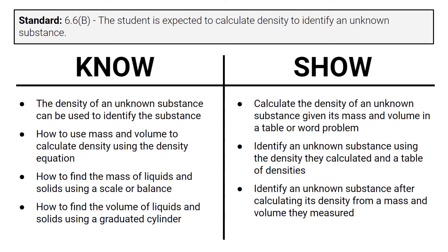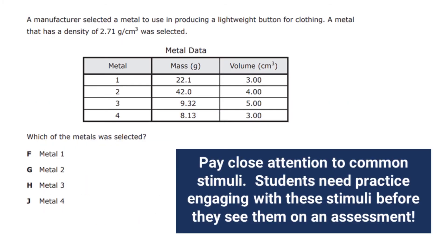In order to prove that students have mastered this standard, they'll need to show that they can do the following things. They'll need to calculate the density of an unknown substance given its mass and volume in a table or word problem. After looking at release questions, I want to make sure that my students can navigate those stimuli — if they can't, then they haven't really mastered this standard yet.